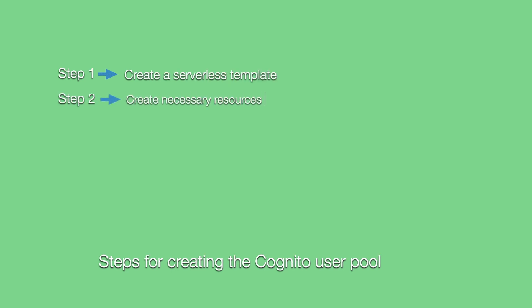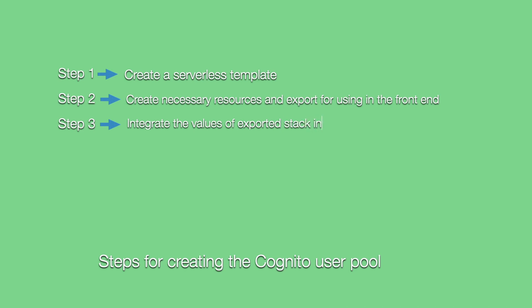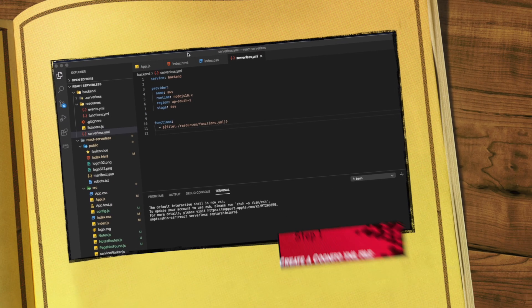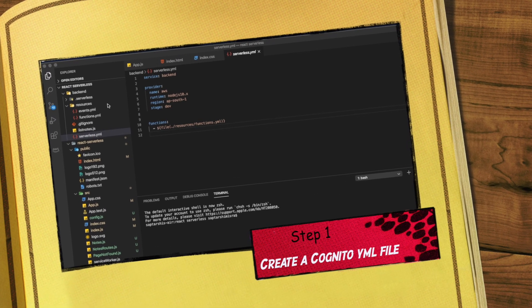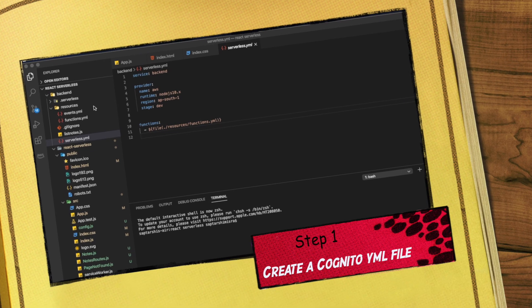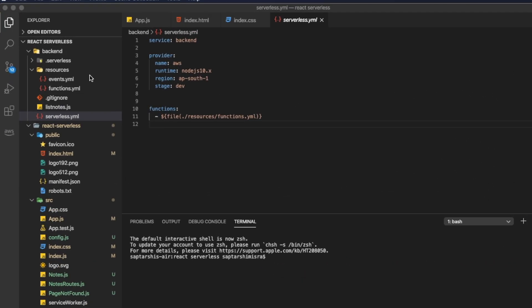The steps for building this Cognito User Pool are: first, we are going to build the serverless template and write code for exporting the resources we are going to need. Once the values are exported from the stack, we are going to use them in the index.js file. We are currently in our backend project structure.